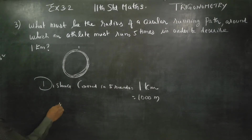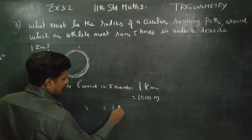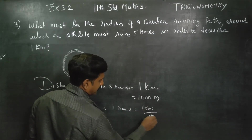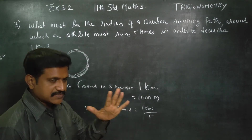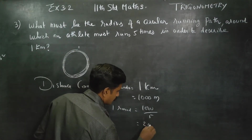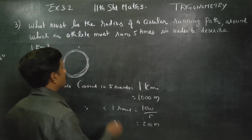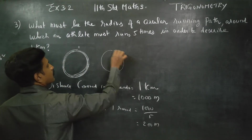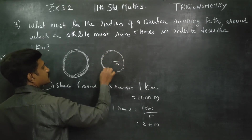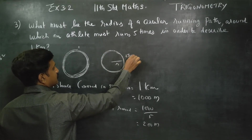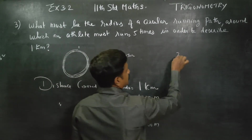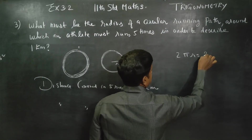Next, distance covered in 1 round equals 1000 divided by 5, which gives 200 meters. Now, 1 round is called the circumference of the circle. So with radius R, 1 round equals 2πR, which is the circumference. Therefore, distance covered in 1 round can also be written as 2πR equals 200.